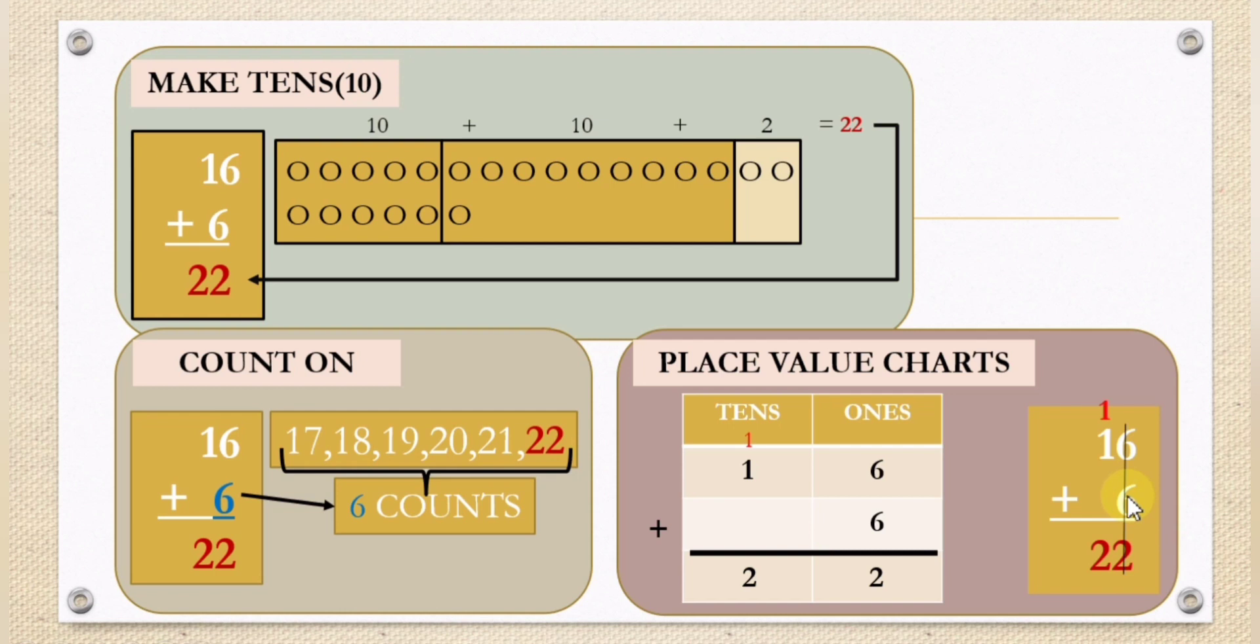Always align the place values of ones and tens. Again, let us explain it. 6 plus 6, we have 12. But the place value of 1 in 12 belongs to the tens value, so that's why we put it here. We carry it over. Carry 1 in the top. Then 1 plus 1, we will have the result of 2.